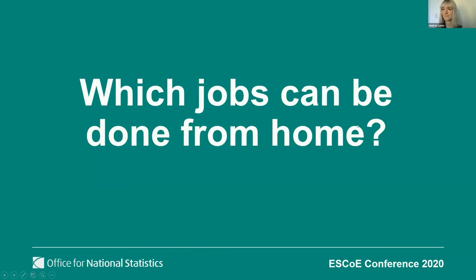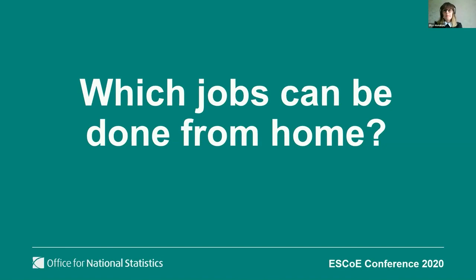Ellis: Thank you. My paper also used the O-Net database, but looked at which jobs can be done from home. We knew from the Annual Population Survey the levels and characteristics of those who worked from home prior to the pandemic. We were aware of government policy advising those who could work from home to do so. As we gathered insights into the proportion working remotely from our Business Impacts of Coronavirus Survey, we wanted to understand more about those who couldn't work from home. The O-Net database offered a variety of variables to develop a measure of ability to work from home. To develop the measure, we identified five factors associated with being less able to work from home, starting with whether a job has to be carried out in a specific location.